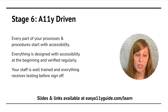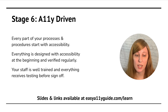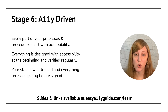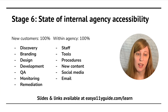The final stage is accessibility driven. Every part of your processes and procedures starts with accessibility. Everything is designed with accessibility at the beginning and verified regularly. Your staff is well trained and everything receives testing before sign-off. Not every organization will get to this point and that's okay — it's okay to forever outsource certain parts. Many organizations continuously outsource certain parts of research or copywriting. But you do need to have enough understanding to know that those outsourced pieces are being fulfilled properly. In stage six, you will have everything fulfilled within your agency — everything for your customer work and everything within your agency will be accessibility first and accessibility driven.